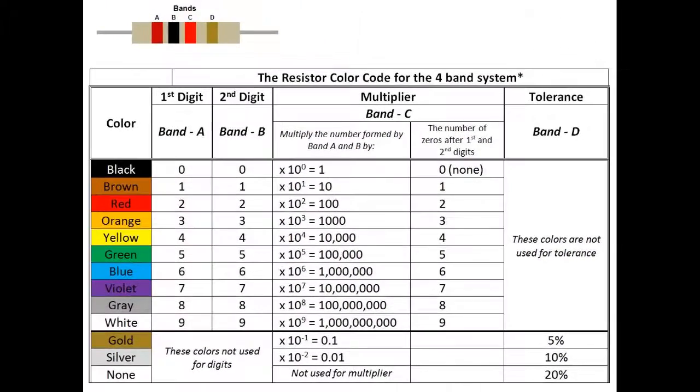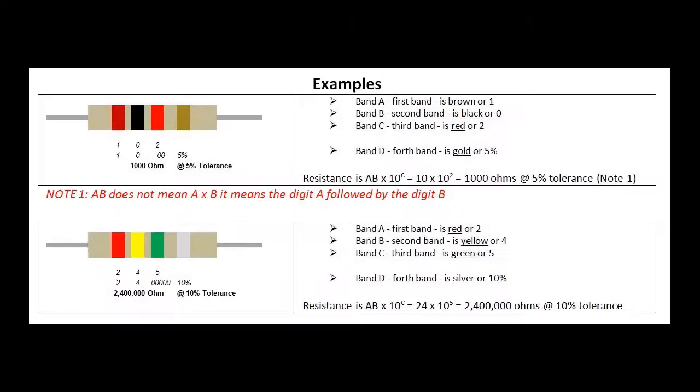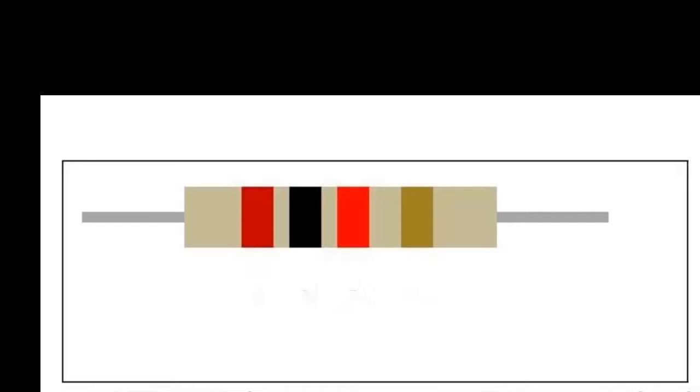Let's look at an example. Here we have a resistor in the upper left corner with brown, black, red, and gold. Brown is 1, black is 0, so the first two digits of this particular resistor are going to be 1-0. Red is 2, so that means there'll be two zeros following the first two digits. So this is going to be a 1000 ohm resistor, and it's a 5% tolerance since the fourth band is gold.